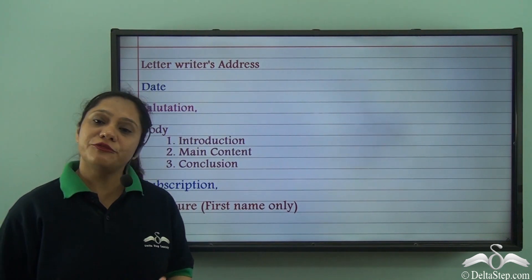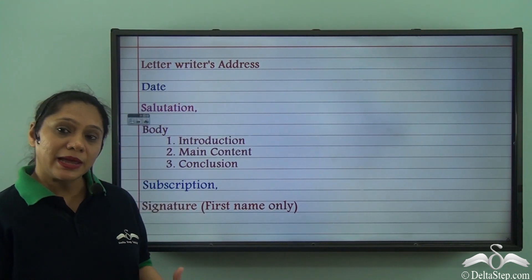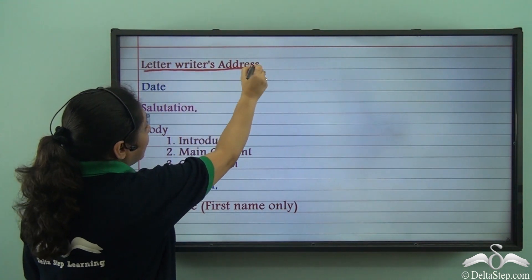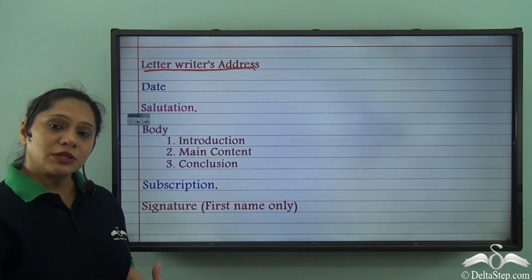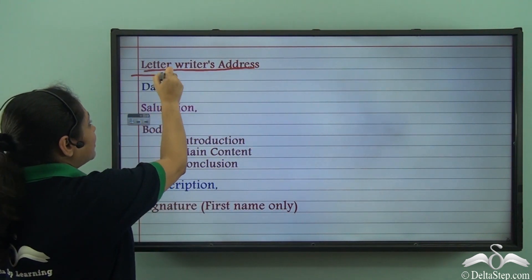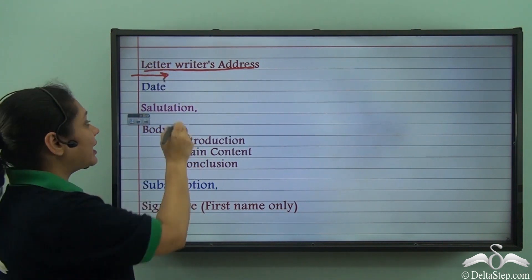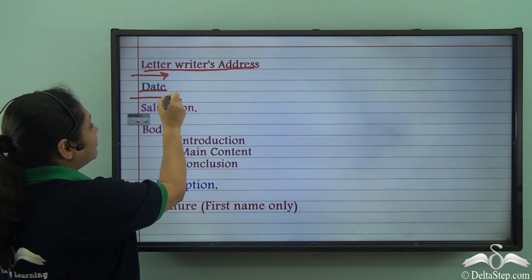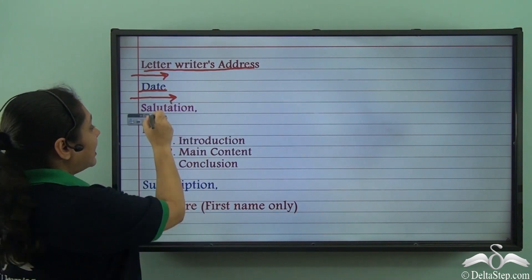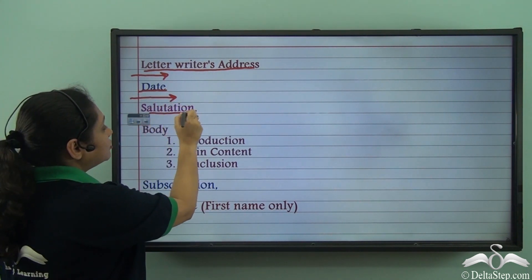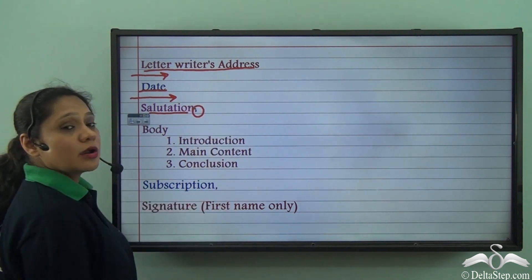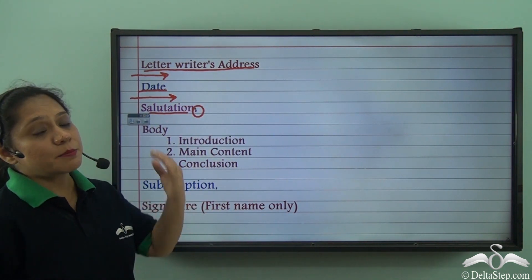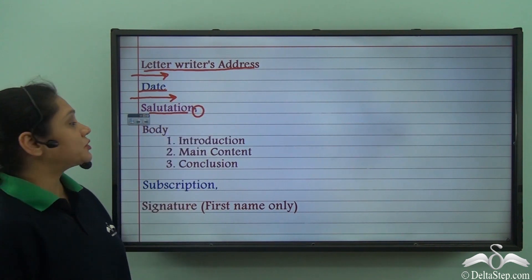Now let us look at the format for writing an informal letter. We start with the letter writer's address at the top. Then we leave a blank line and write the date. After the date, we leave another blank line and write the salutation followed by a comma. A salutation is our way of addressing the person we are writing the letter to.